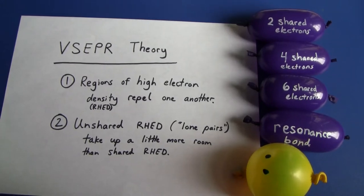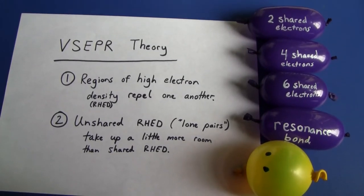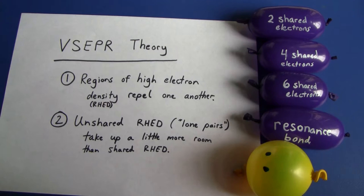The two main principles of the valence shell electron pair repulsion theory, or the VSEPR theory, are: number one, regions of high electron density repel one another. These regions are going to get as far away as possible. We have two main types of regions of high electron density.